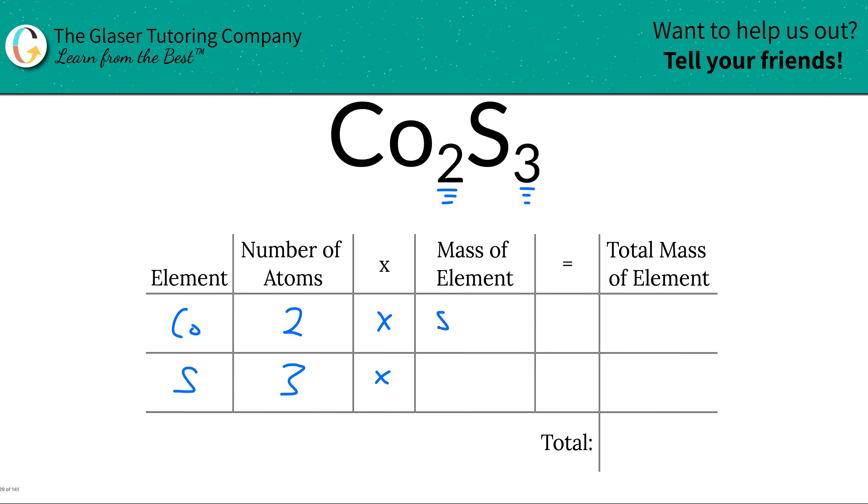So that's what we're going to write down. 58.93 for cobalt, 32.07 for sulfur. And now we're going to find the total mass of each element in the compound.